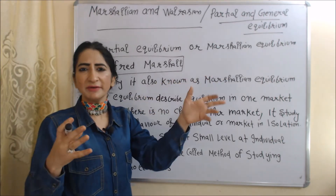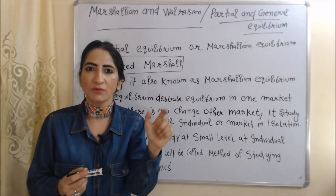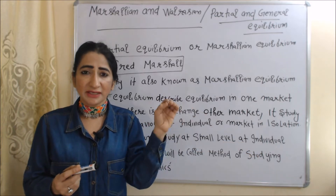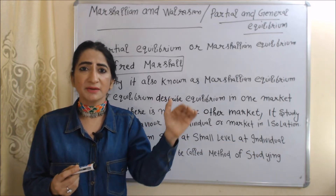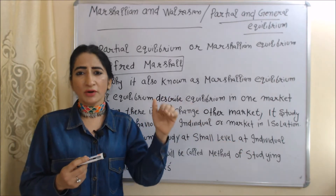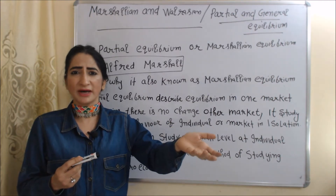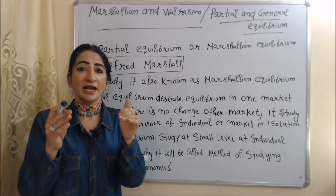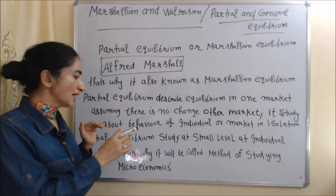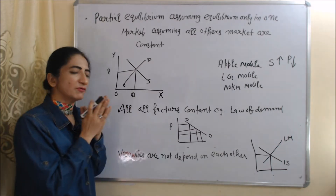Partial equilibrium describes equilibrium only in one market, assuming all other markets are constant. We can say that partial equilibrium studies individual behavior or studies the market in isolation. Partial equilibrium studies at a small, individual level — that's why it is called a method of studying microeconomics.